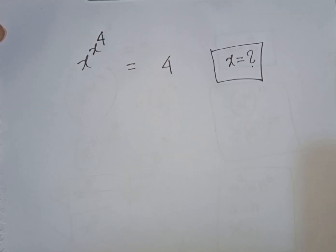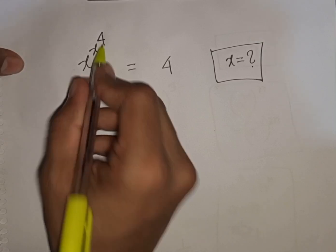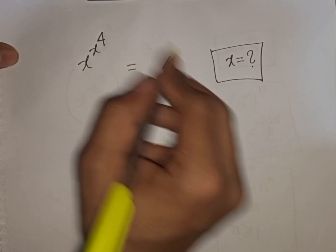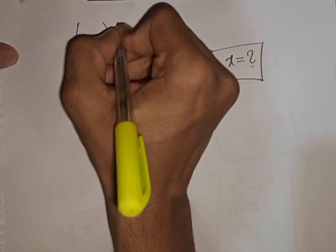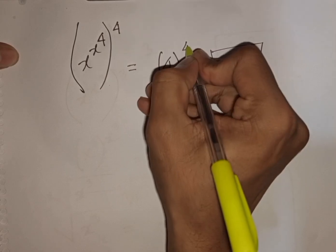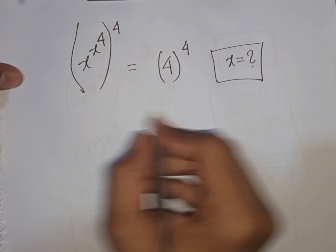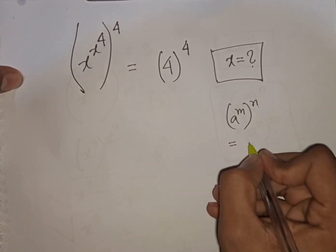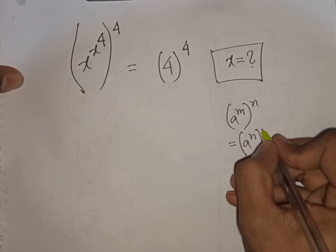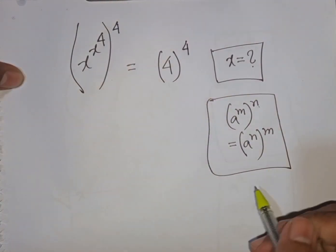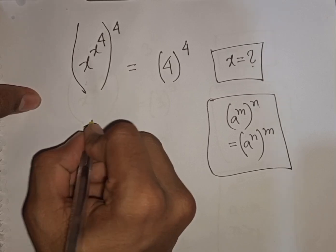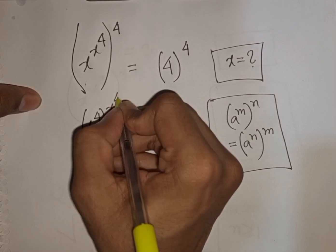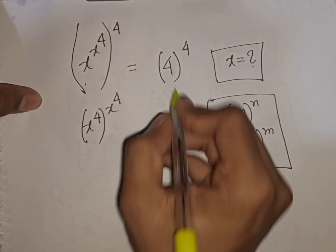How to solve x power (x power 4) equals 4. Find the value of x. At first we raise both sides to the power 4. We apply the rule (a power m) power n equals (a power n) power m, so we get (x power 4) power (x power 4) equals 4 power 4.